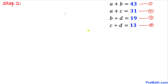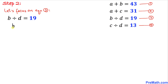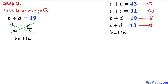Let's focus on equation number three: B divided by D equals 19. I can write this as a fraction and cross multiply. That gives us 1 times B equals 19 times D, so B equals 19D. I'll call this equation number five.